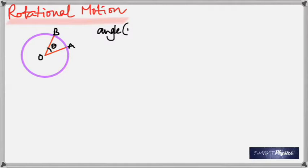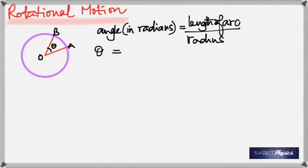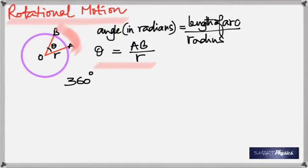The angle has to be in radians. Angle is defined as the length of the arc divided by the radius — that's the definition of angle in radians. So theta would be arc AB divided by the radius. Since it's length divided by length, it technically has no dimension.